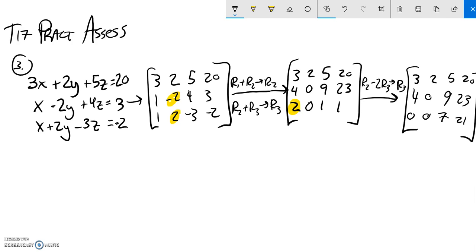Great, so now I can see what Z is right here because seven Z is twenty-one, so Z must be three.